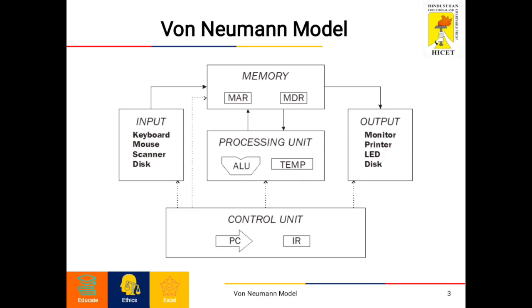Registers refer to high-speed storage areas in the CPU. The data processed by the CPU are fetched from the registers. There are different types of registers used in this architecture. The first one is the accumulator, which is used to store the results of calculations made by the ALU. It also holds intermediate results of arithmetic and logical operations, acting as a temporary storage location.